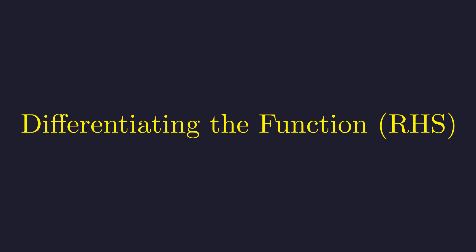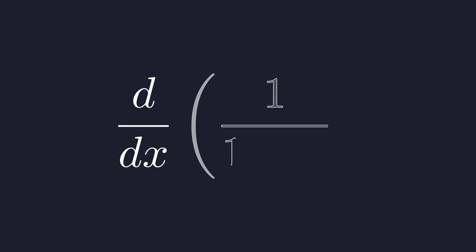Next, let's handle the right-hand side. This is a standard function derivative. We need to find the derivative of 1 over the quantity 1 minus x. To make this easier for the power rule, let's rewrite the fraction using a negative exponent.